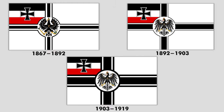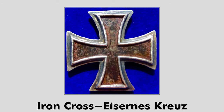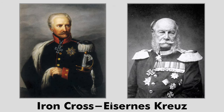These are the war flags used by the German Empire. This is the Marine Jack. The symbol used there is the Iron Cross — a military decoration used in the Kingdom of Prussia and in the German Empire. The Iron Cross was a medal given to German soldiers for bravery during wartime.